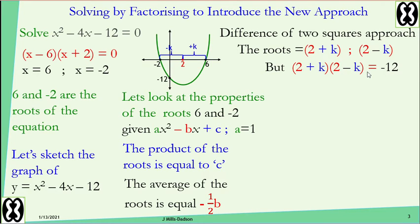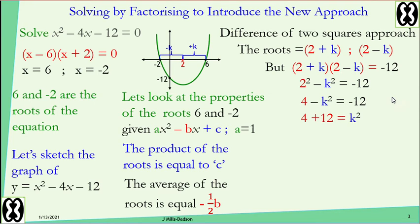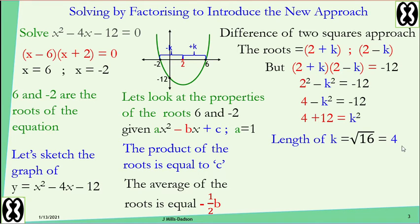When you multiply the roots and set equal to the constant, you have a difference of two squares on the left-hand side. Solve for k: k squared equals 16, so k equals 4. Don't worry about the plus or minus because we're looking for a length and the plus or minus is already built into the root expressions. So your roots are two plus four equals six, and two minus four equals negative two — exactly the answers we found.